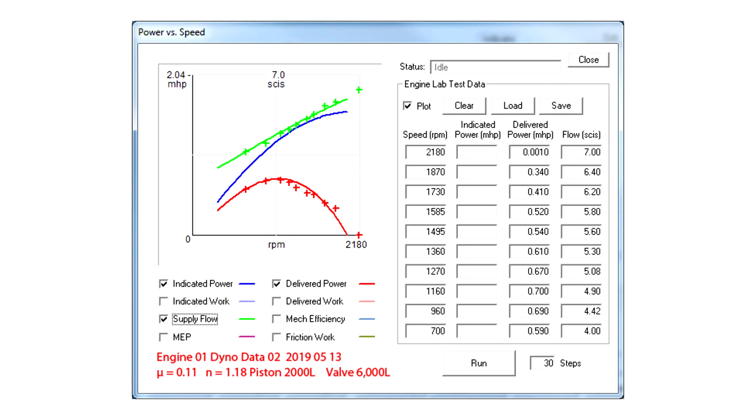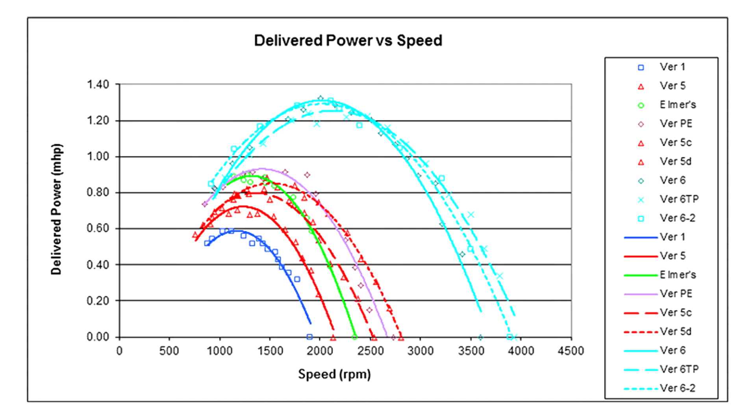With engine modifications and testing still a work in progress, the simulation predicts that it might be possible to quadruple the baseline engine's delivered power. This plot reflects deliberate power improvement for a few simple changes, with many more changes to go.